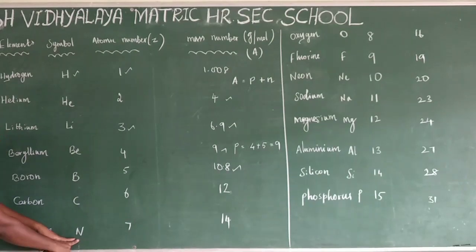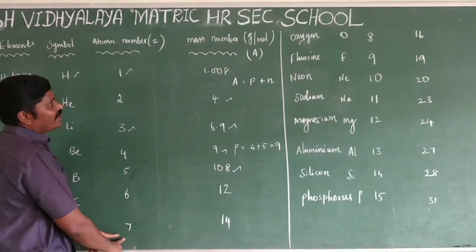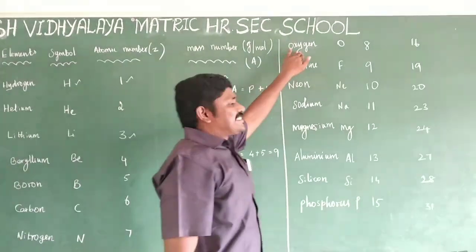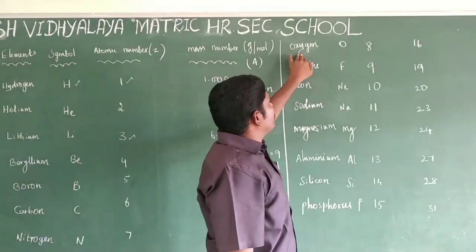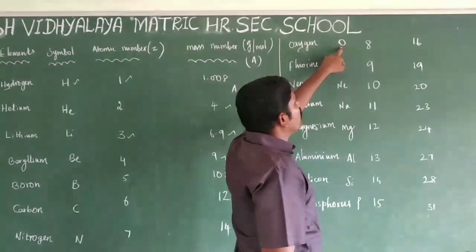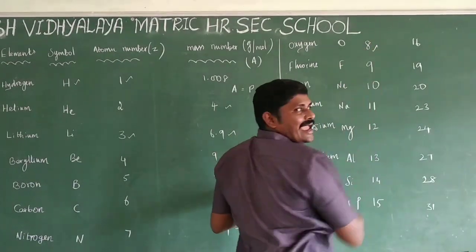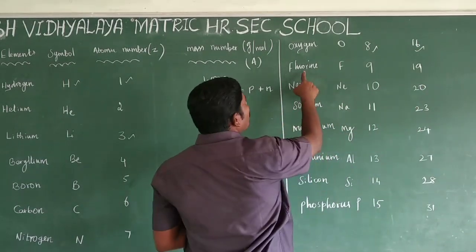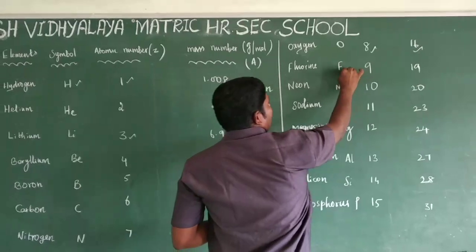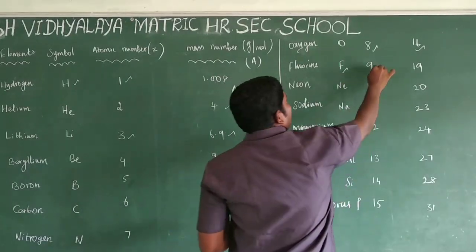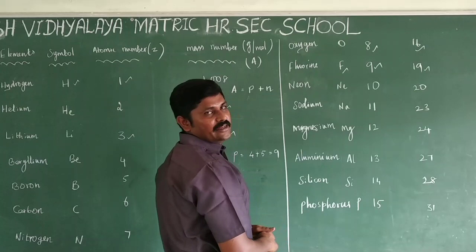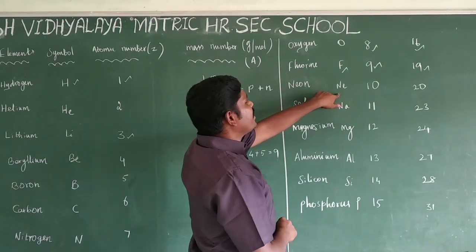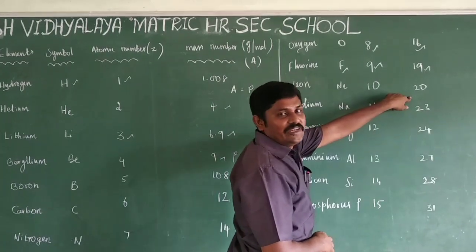Boron: atomic number 4, atomic number 5, mass number 10.8. Nitrogen: atomic number 7, mass number 14. Oxygen, symbol O: atomic number 8, mass number 16. Fluorine, symbol F: atomic number 9, mass number 19. Neon, symbol Ne: atomic number 10, mass number 20.